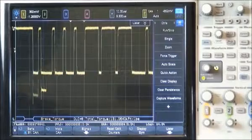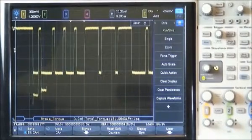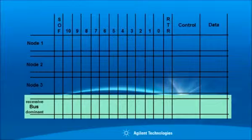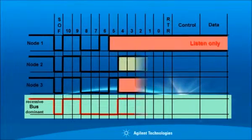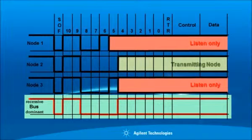Here we show repetitive acquisitions again with random arbitration occurring. When arbitration occurs, there's a bitwise arbitration process that takes place that determines which frame has priority to continue transmitting the rest of the frame, which is the frame with the lowest ID. In this graphical example, node 2 has the lowest ID value and took full control of the bus, beginning at transmission of bit number 4.